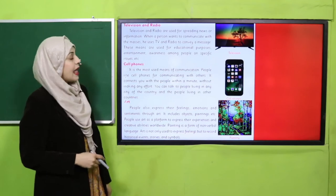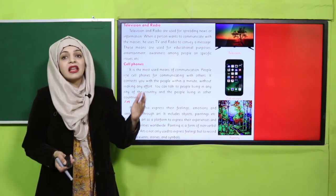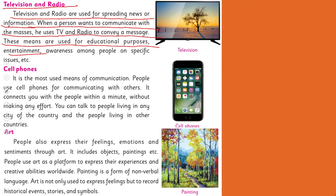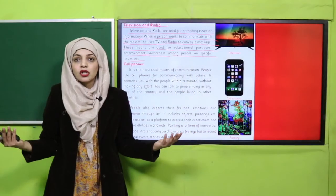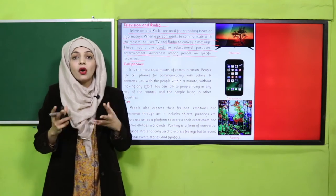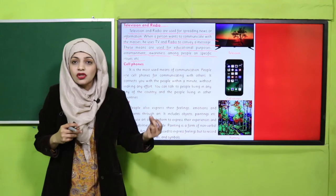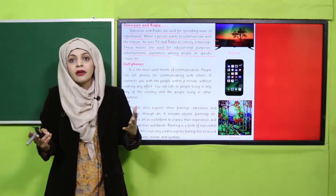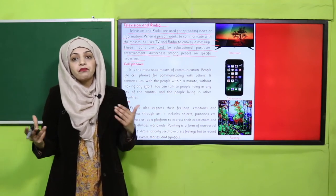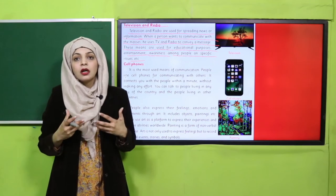Television and radio are used for spreading news or information when a person wants to communicate with the masses. He uses TV and radio to convey a message. These means are used for educational purpose, entertainment, and awareness among people on specific issues. Jab aapko poore mulk ya poori duniya tak baat pahunchani ho, tab TV and radio use kiya jaata hai. Agar aap ek news generate karte hain TV pe, to poori duniya tak baat pahunchti hai.